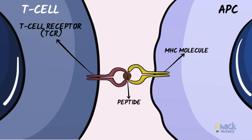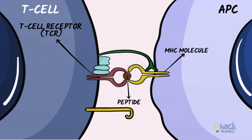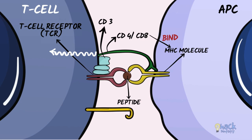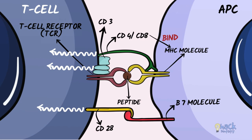Apart from the T cell receptor, T cells also possess other proteins and co-receptors that are necessary for signal transduction for T cell activation. CD4 and CD8 molecules are co-receptors present on CD4 and CD8 T cells respectively, and these co-receptors bind to the MHC molecule during antigen recognition and are necessary for T cell activation. CD3 complex are a bunch of polypeptides that help in transduction of signals for T cell activation, and CD28 is a co-receptor that binds to the B7 molecule present on the nucleated cell or antigen-presenting cell.